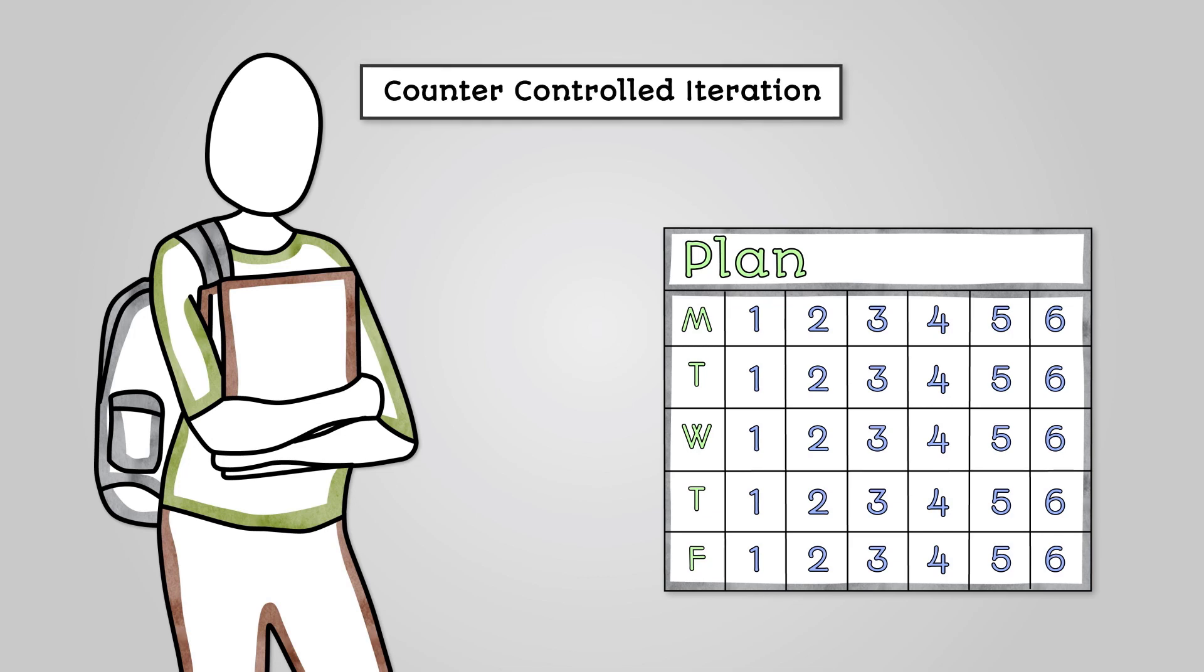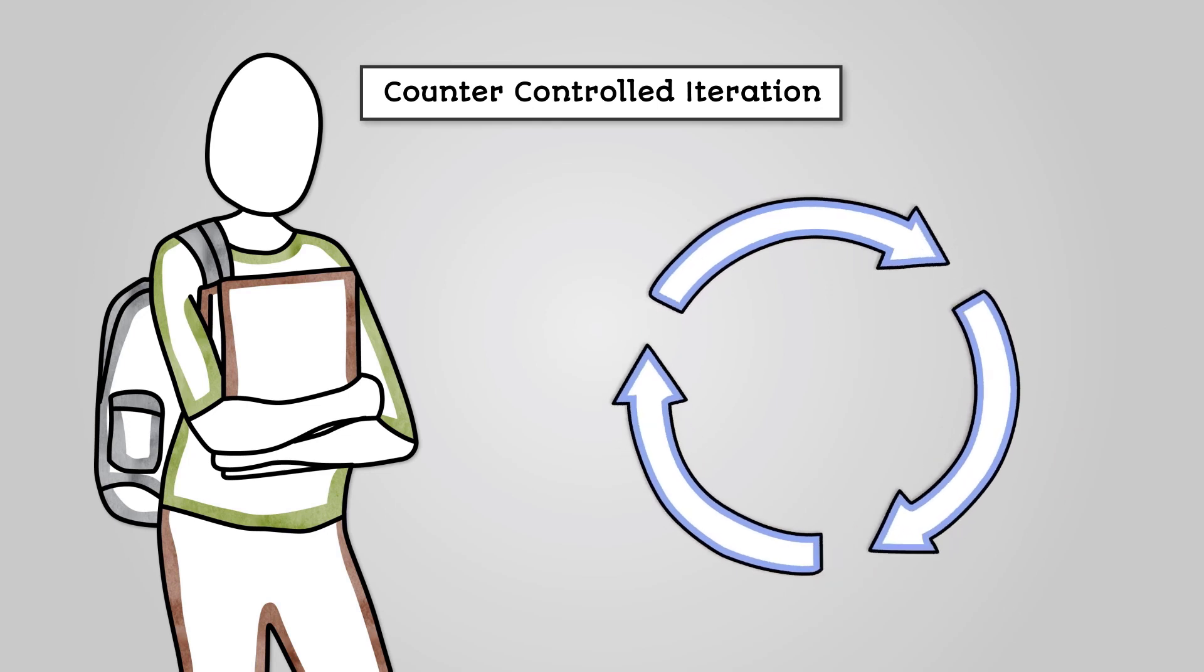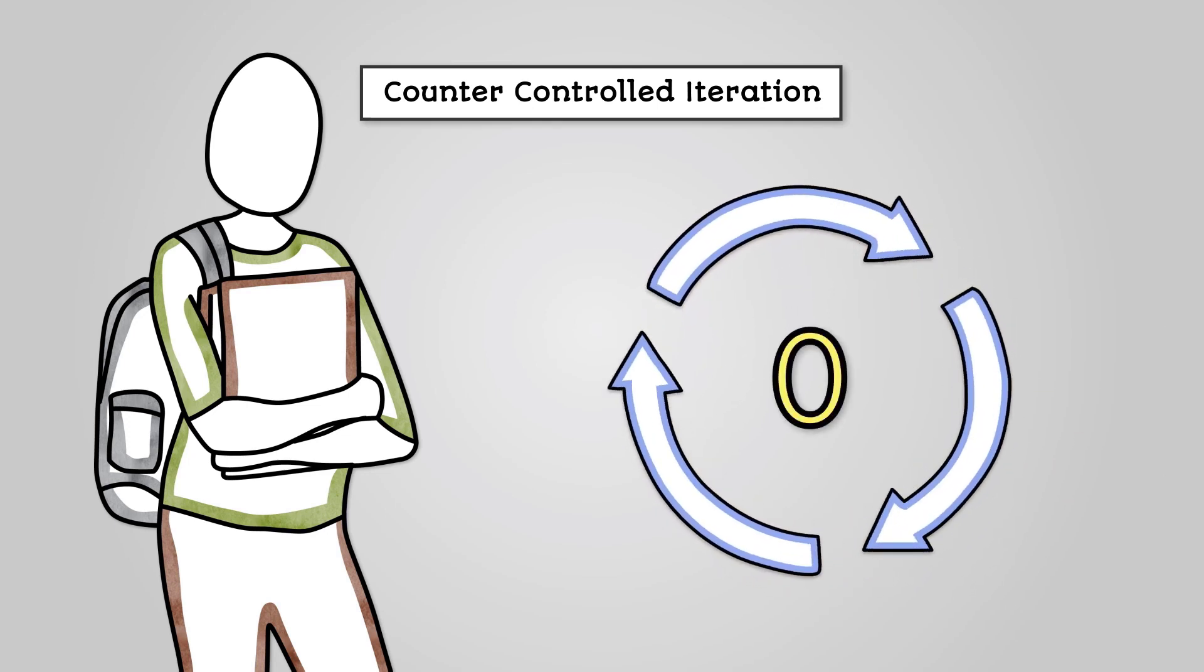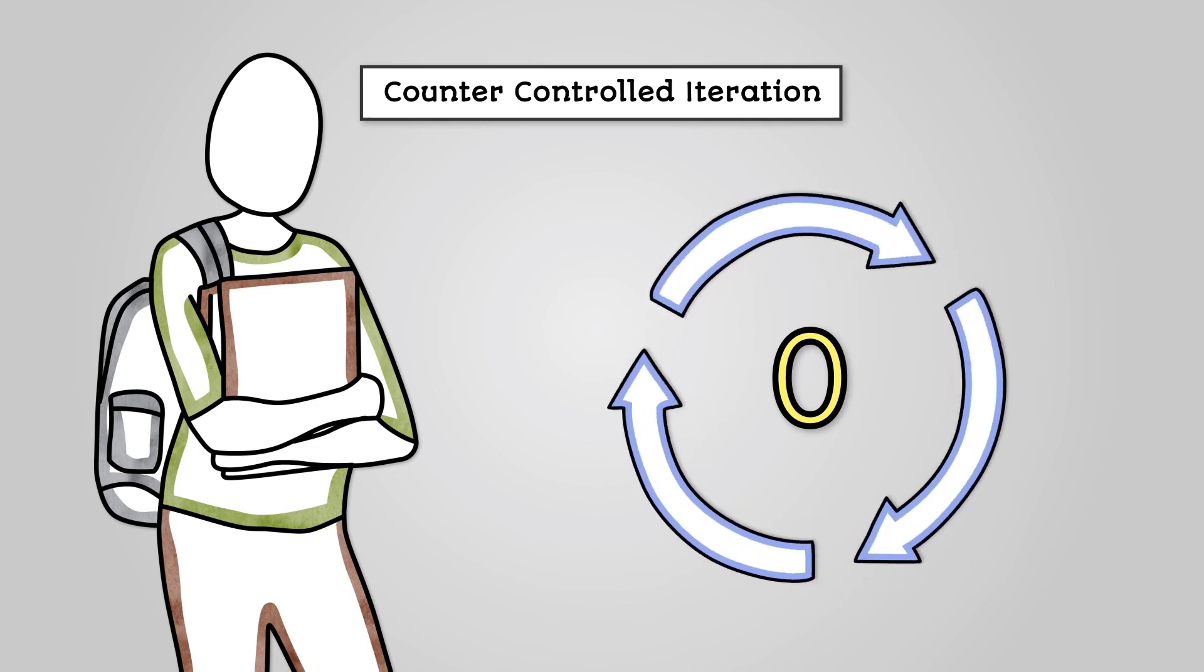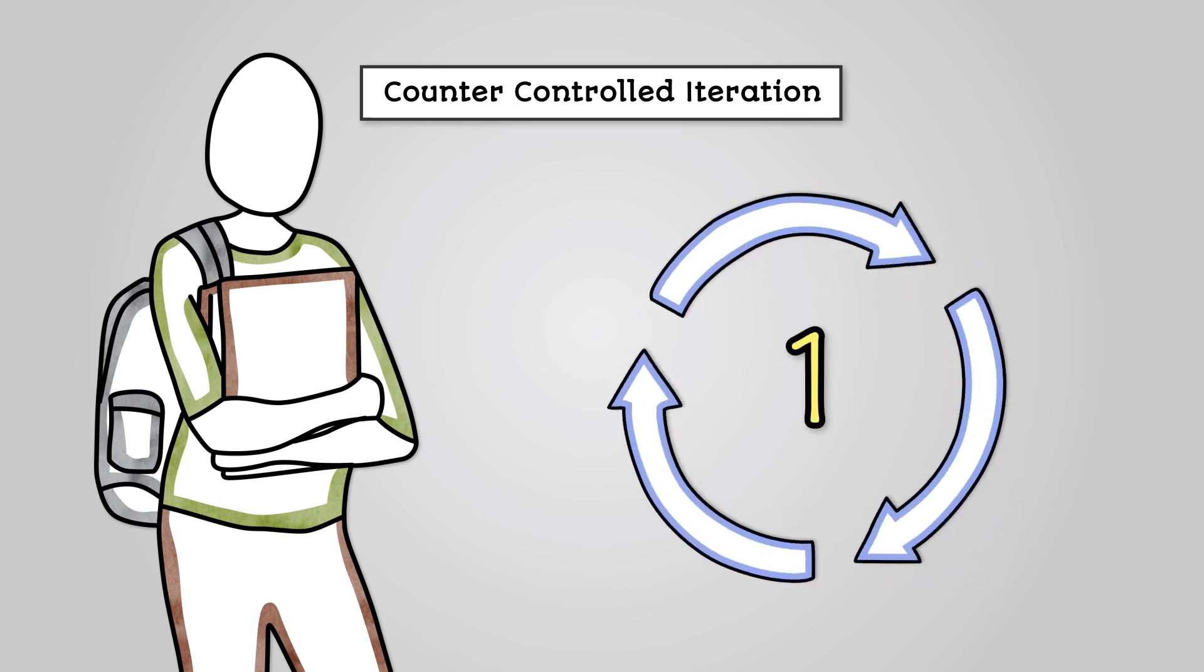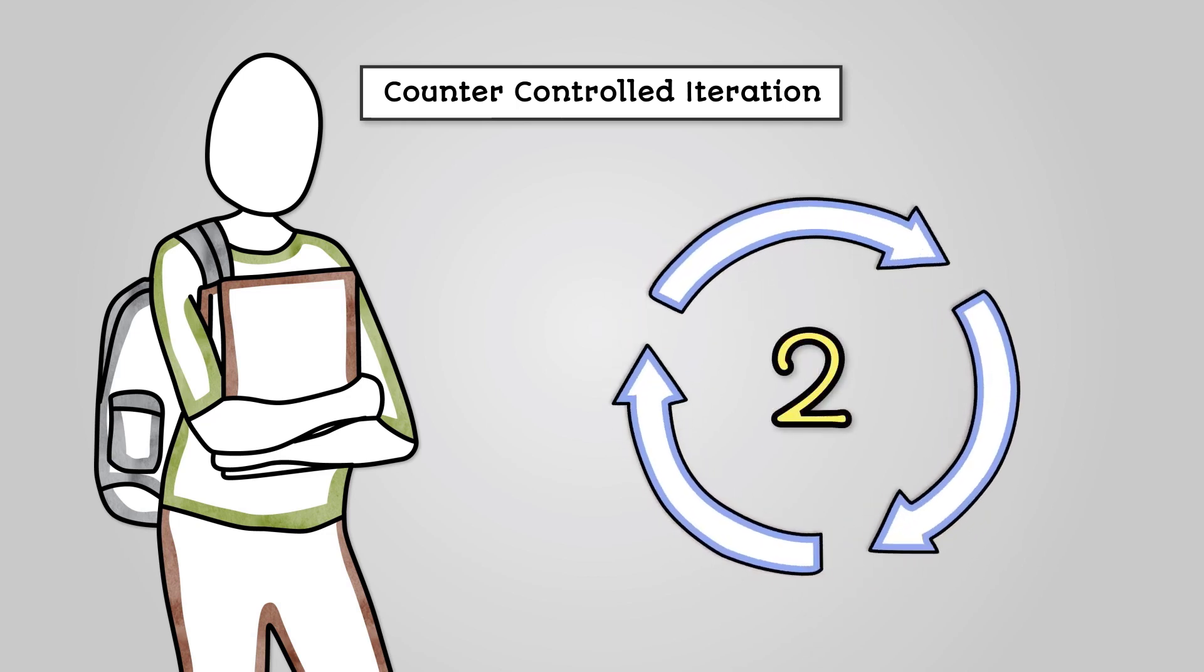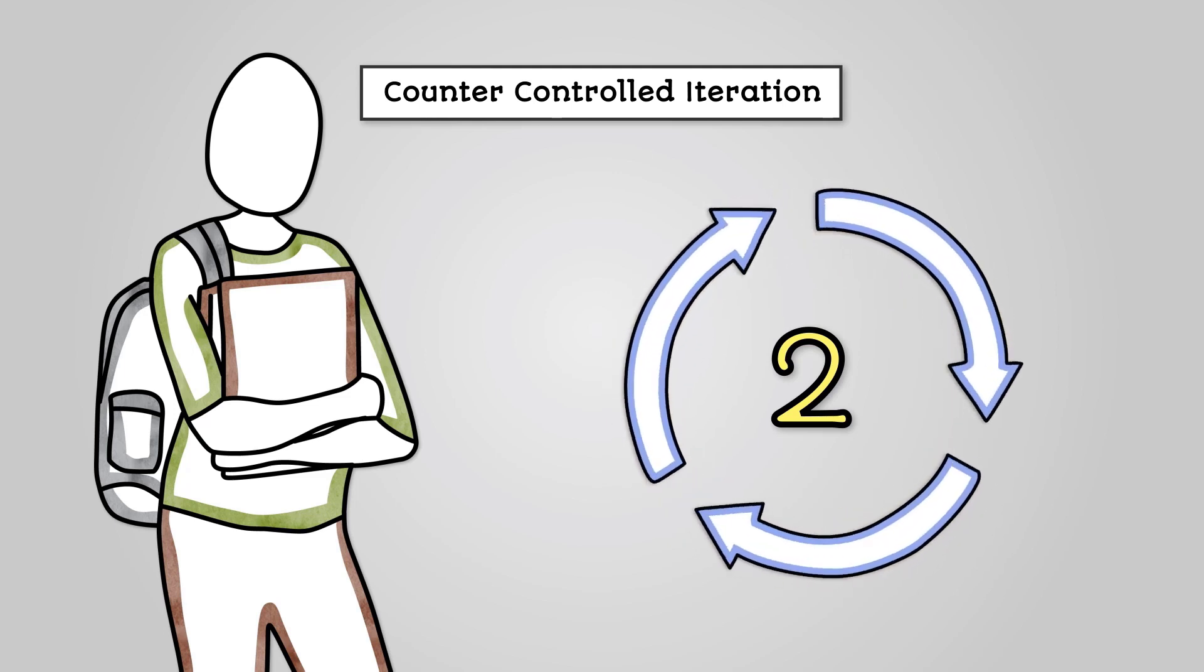This is a counter controlled iteration. Basically you have a numerical counter that usually starts at zero. There is also a target to aim for, the maximum number of lessons in a day. After each time around the loop the counter goes up by one, so at the end of your first lesson the counter would be at one. At the end of your second lesson the counter will be at two. When the counter reaches a target the loop finishes.